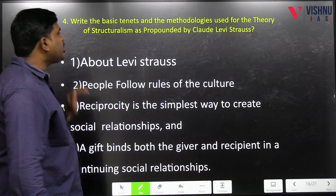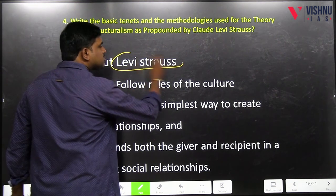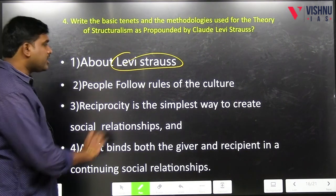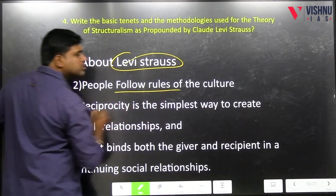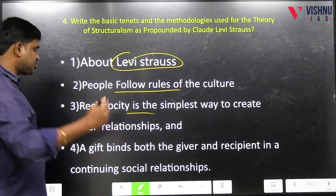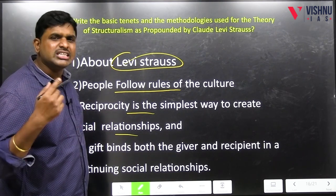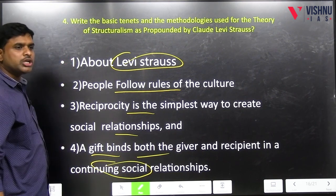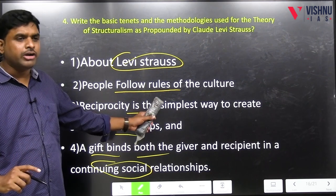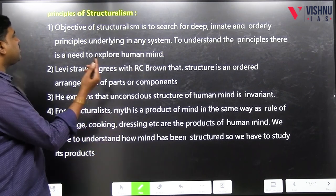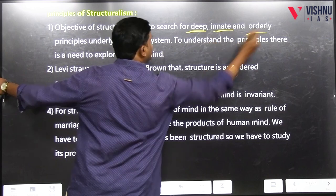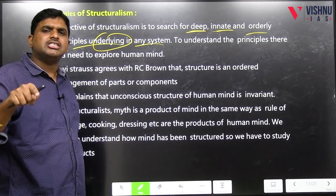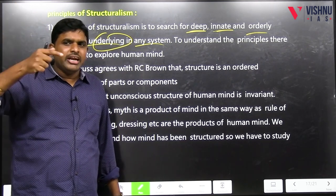What are the basic tenets and methodologies used for the theory of structuralism as propounded by Claude Lévi-Strauss? First, write about Lévi-Strauss as already discussed — French anthropologist, took from Durkheim. Basic tenets: people follow rules of culture and love to follow the rules. Reciprocity is a simple way to create social relationships — give and take. A gift binds both giver and recipient in a continuing social relationship. Everything is a reciprocal relation according to Lévi-Strauss's structuralism. Then: we should search for a deep, innate, orderly principle underlying any system. The deep innate underlying law is present in the human mind — we need to explore human mind.